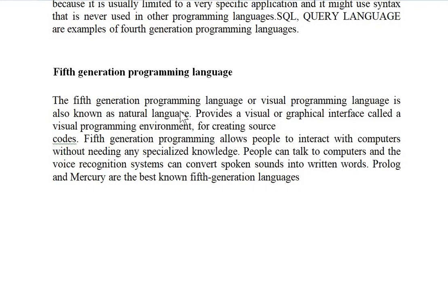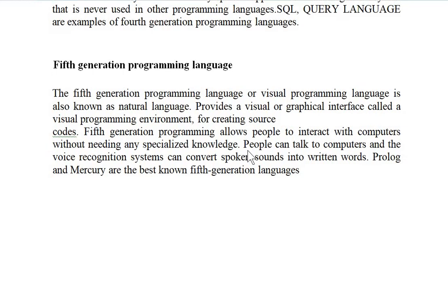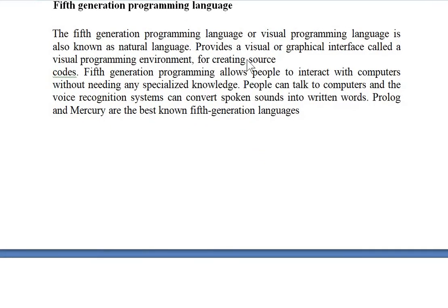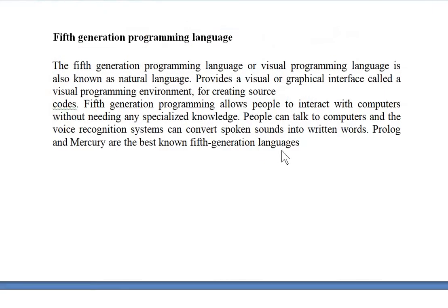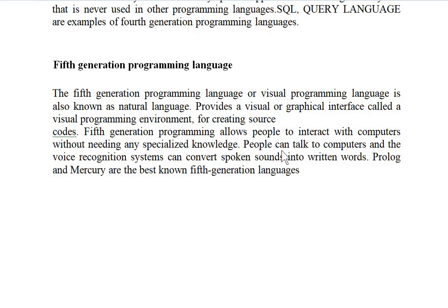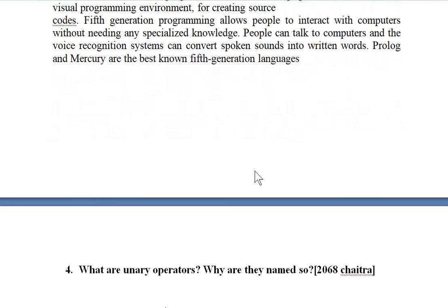Fifth generation language is very close to human natural language — you can give instructions to a machine without any specialized programming knowledge. For example, Siri allows humans to talk to computers. Fifth generation programming allows people to interact with the computer without needing specialized knowledge. Examples of fifth generation languages are Prolog and Mercury.